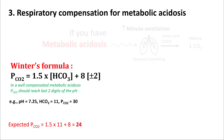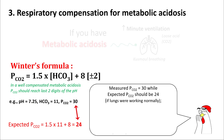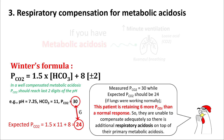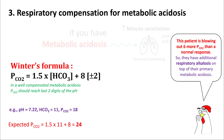Here, the measured pCO2 is 30 while the expected is 24. If your lungs were working perfectly, you should have reached pCO2 of 24, but you are at 30 — retaining 6 more CO2 than a normal response. So you are unable to compensate adequately, meaning there is an additional respiratory acidosis on top of this metabolic acidosis. If your pCO2 were 18 instead, you would be blowing out 6 more CO2 than normal, indicating additional respiratory alkalosis. Compare expected pCO2 to the patient's measured pCO2 to find any uncompensated respiratory acidosis or alkalosis.